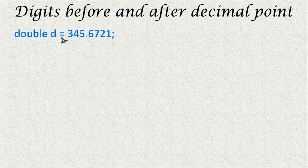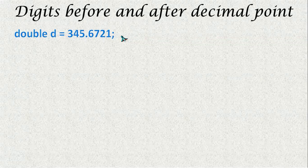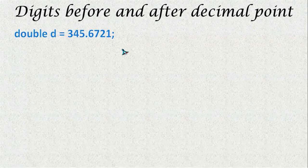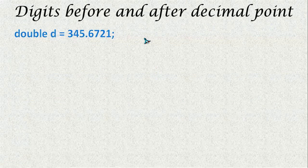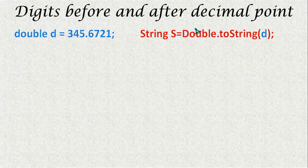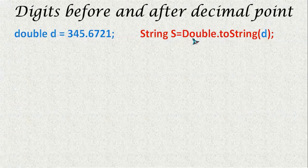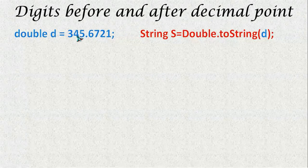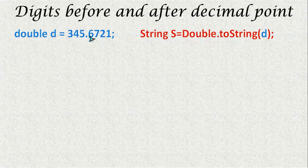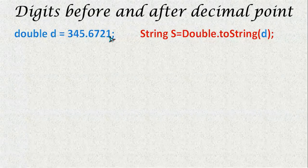For this we take a double type number and then convert it into a string type. We already learnt about wrapper class. Using wrapper class we will convert this double type into string type. If we write this string function this double type number will get converted into string type. Now we can easily find how many characters are there before this decimal point using the index value, and also find the number of characters after this decimal point.